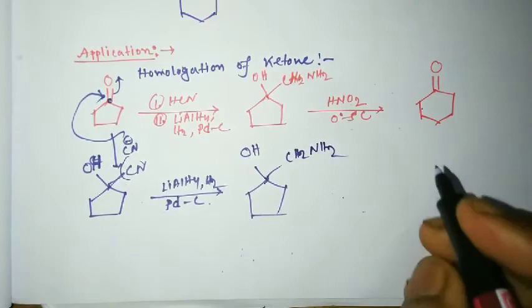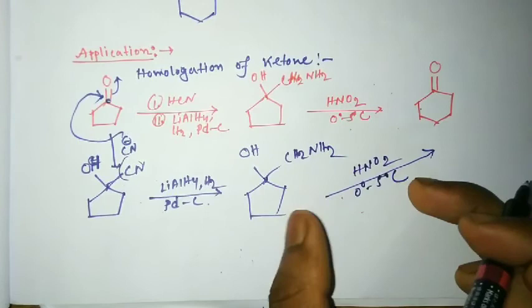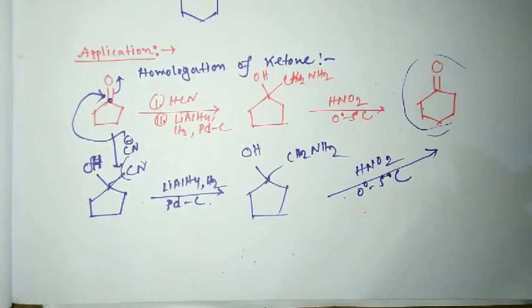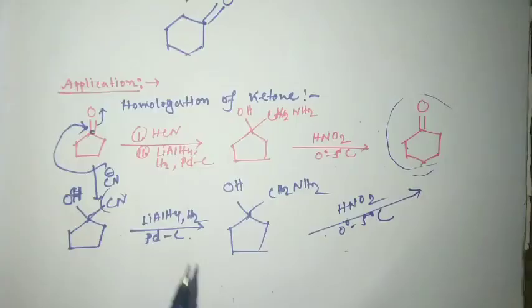Then when it is treated with nitrous acid at 0 to 5 degrees Celsius, Tiffeneau-Demjanov rearrangement takes place and this is converted to the carbonyl compound. So here we see that the five-membered ketone is converted to a six-membered ketone with the help of this rearrangement. Thank you.